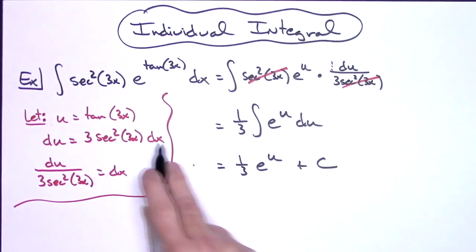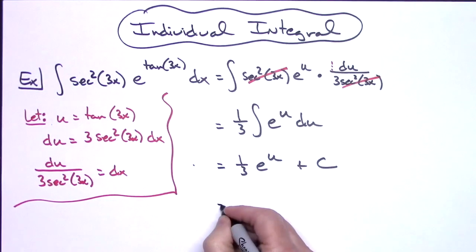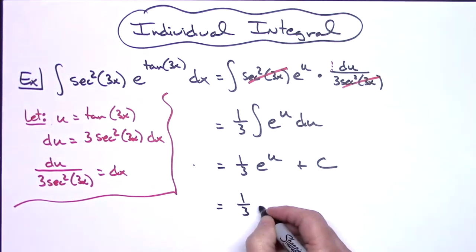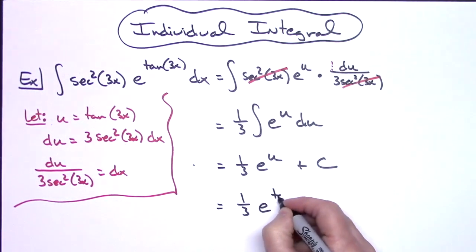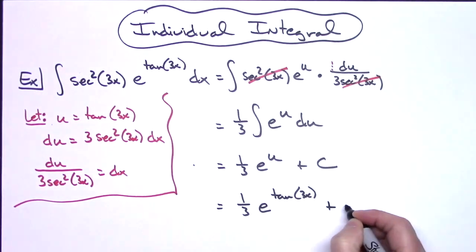Last step there would be to replace u with what it equals. So then I would have 1/3 e raised to the tangent of 3x plus c.